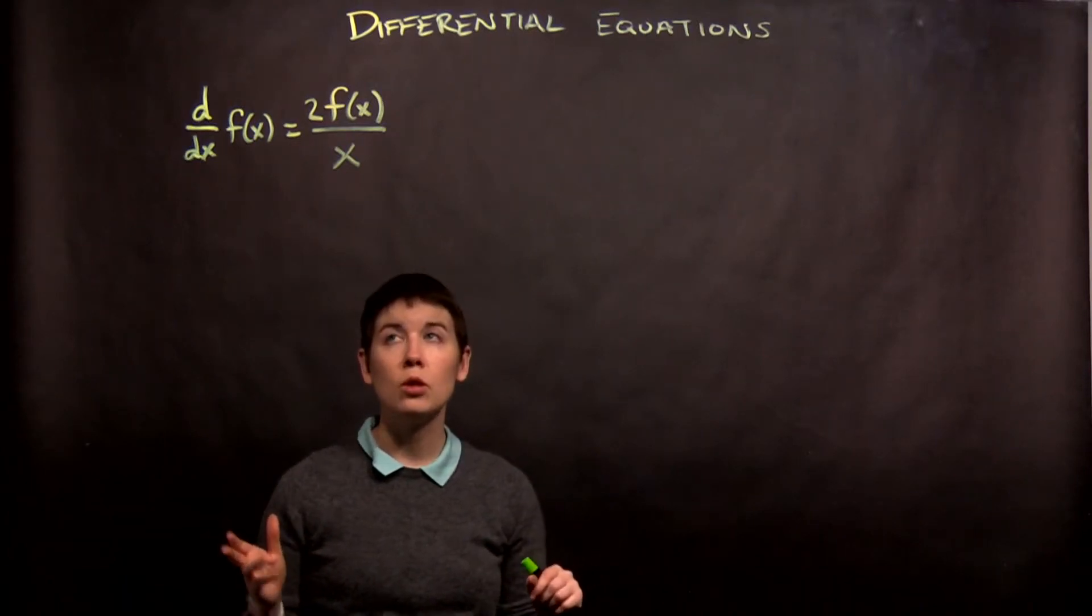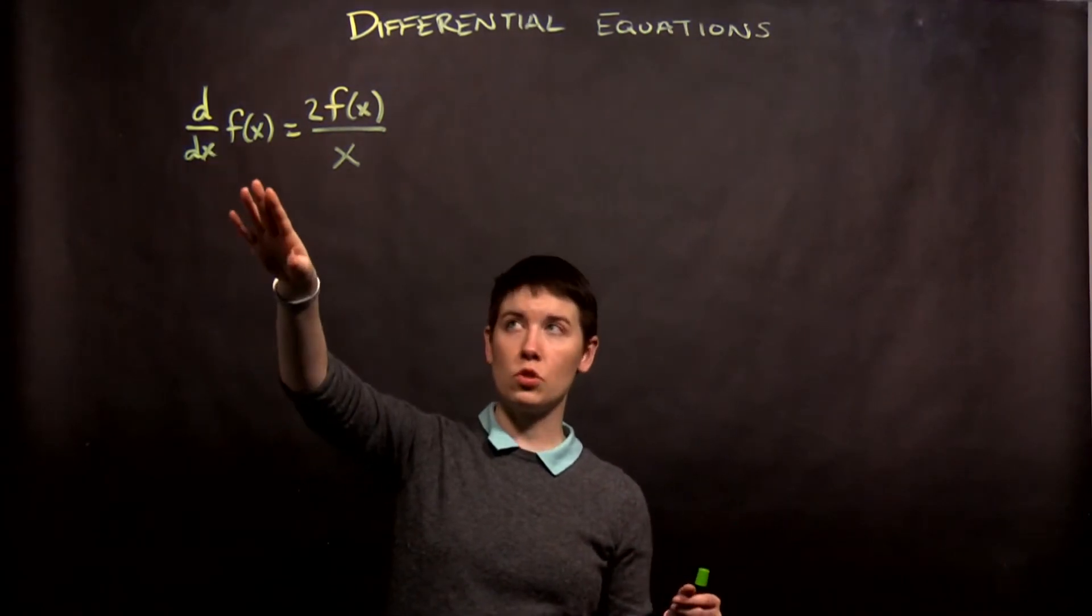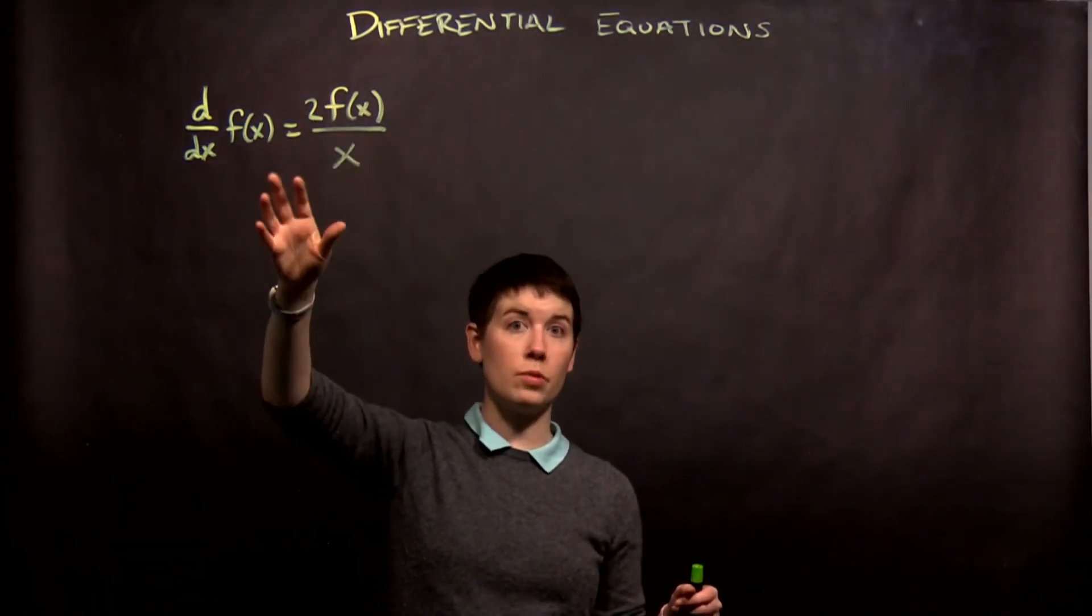Going through another differential equation example. Now we have that the first derivative of a function, in this case a function of position, is equal to twice that function divided by the position itself.